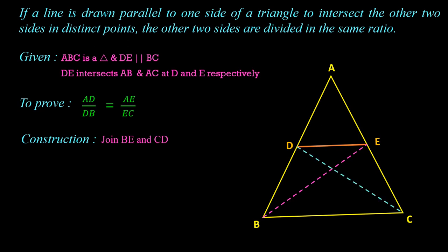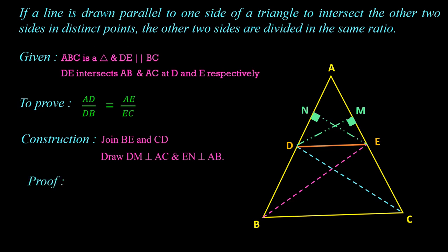To find the areas we require altitudes. I am drawing altitude DM to base AE in triangle ADE — DM is also the altitude for triangle DEC. I am also drawing altitude EN to base AD in triangle ADE — EN is also the altitude for triangle BDE.